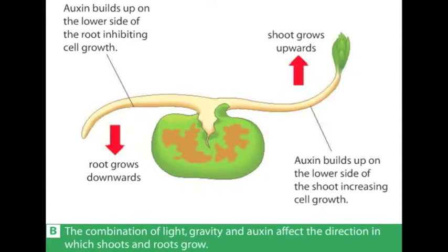Auxin also makes plant roots grow down into the soil. Gravity is an important part of this process. Auxin builds up on the lower side of the root and slows down growth on this side, allowing the upper side to grow much quicker. The force of gravity helps the root to bend downwards and grow deeper into the soil.